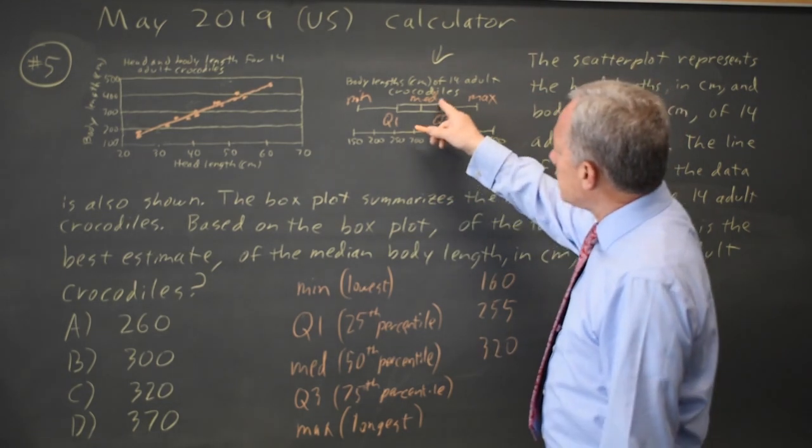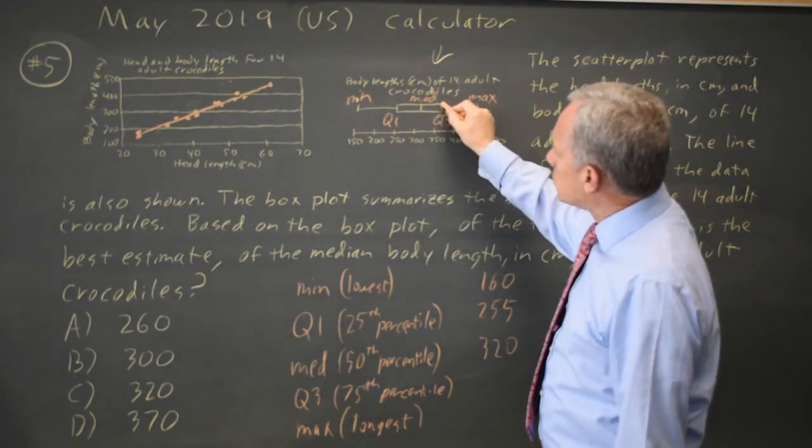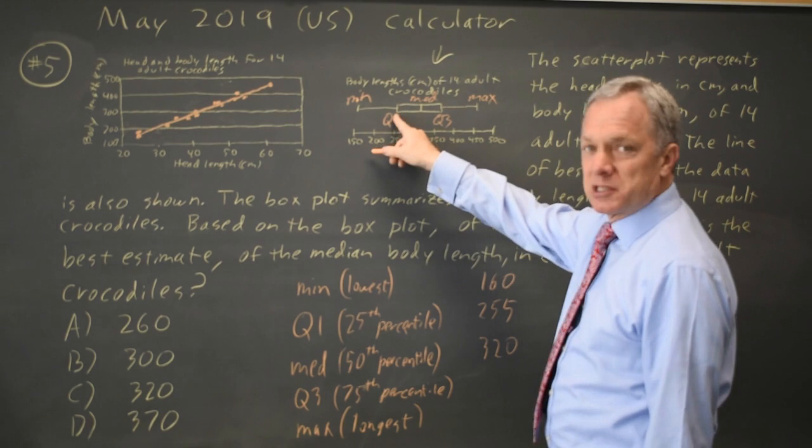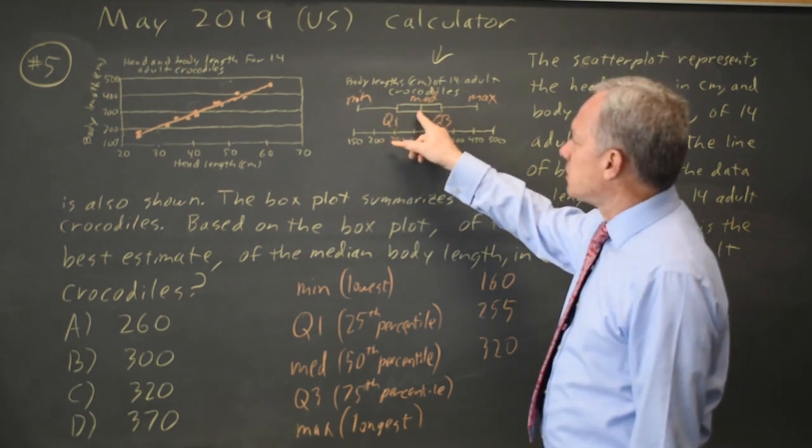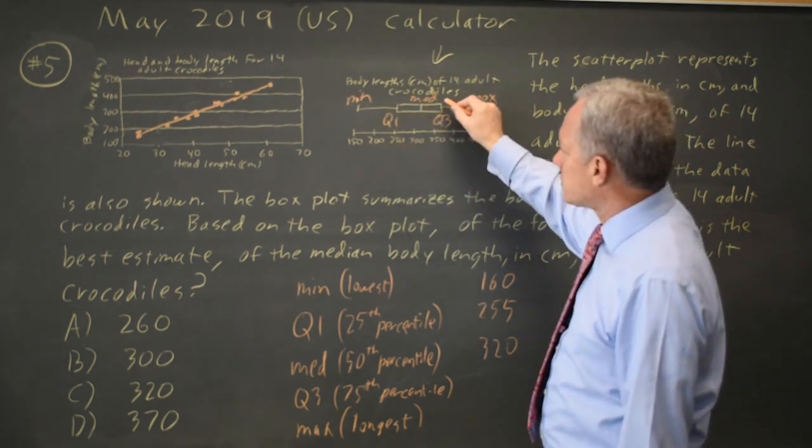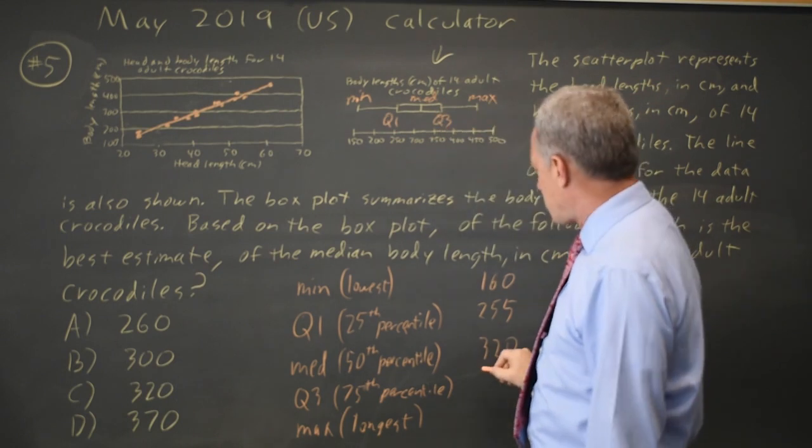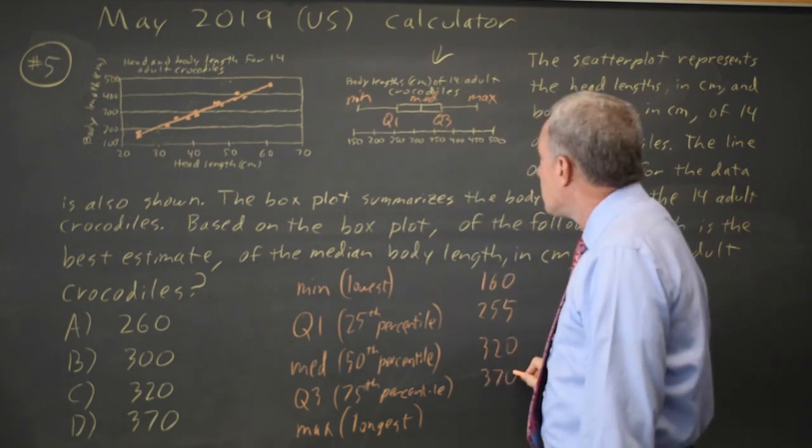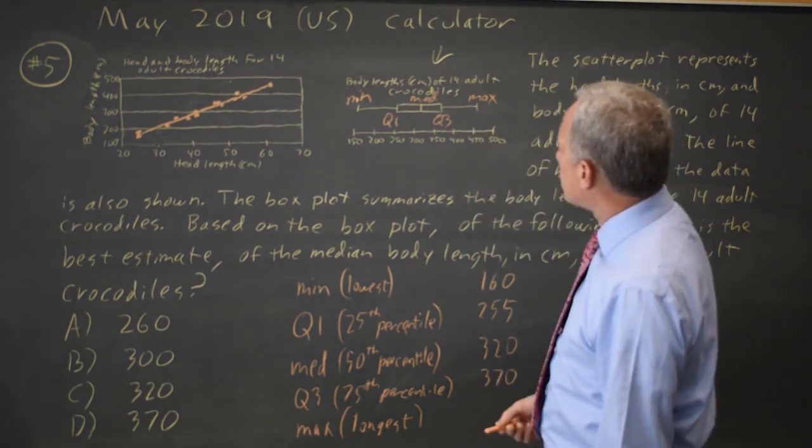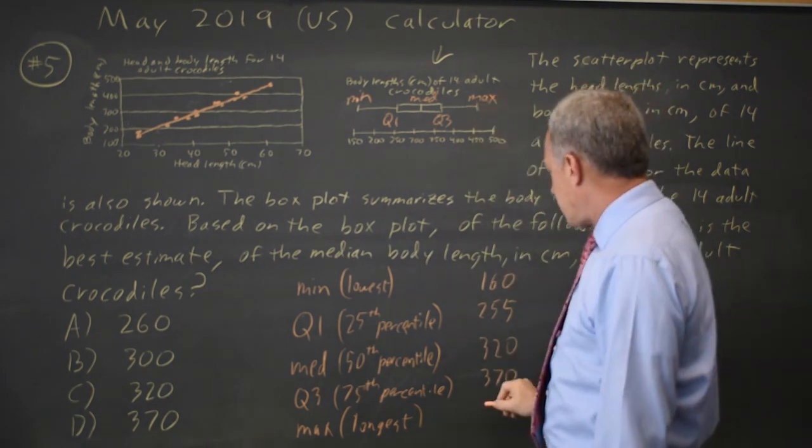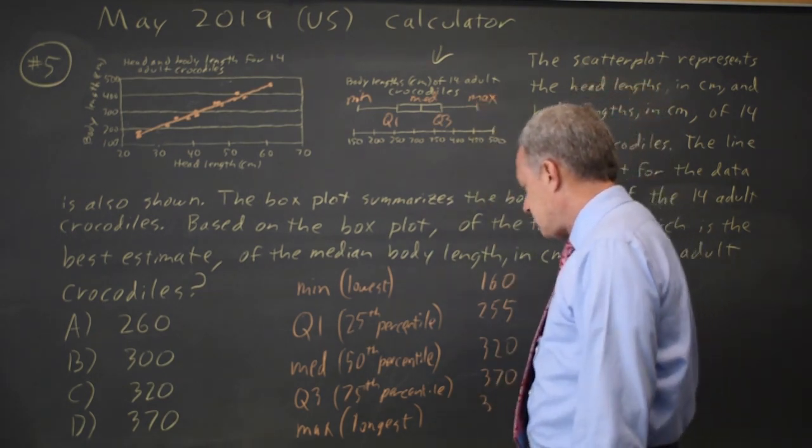Quartile three is the top of this rectangle. Quartile one is the bottom of the rectangle. Median is the vertical line in the middle of the rectangle. So quartile three is maybe 370. And the maximum is a little over 450, maybe 460.